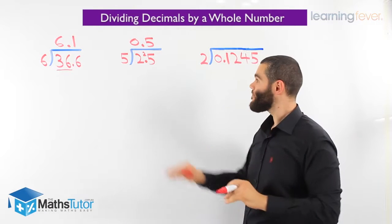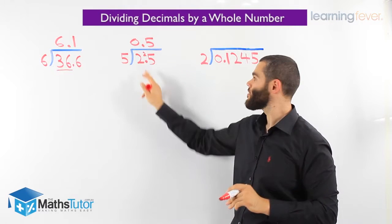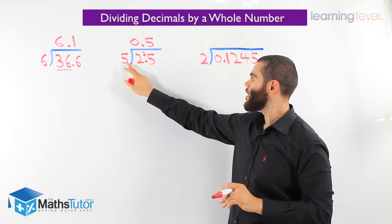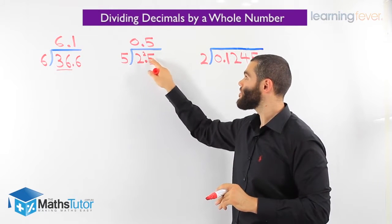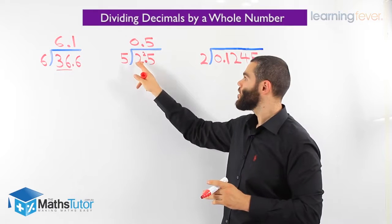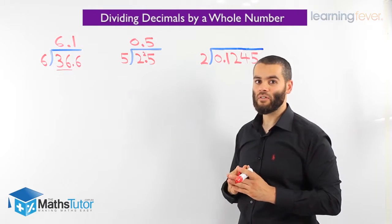So, let's go through it one more time. How many 5's go into 2? None. We carry the 2. And we notice there's a point. We put the point up. 5 into 25, 5 times. So, 2.5 divided by 5 is 0.5.